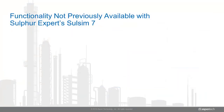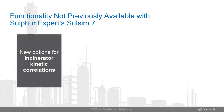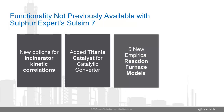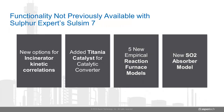With the streamlined integration of SALSIM and Aspen HYSYS, you'll find several new functionalities. These include new options for kinetic correlations in the incinerator model, an added catalyst type in the catalytic converter, five new empirical reaction models in the furnace, and a new sulfur dioxide absorber model.